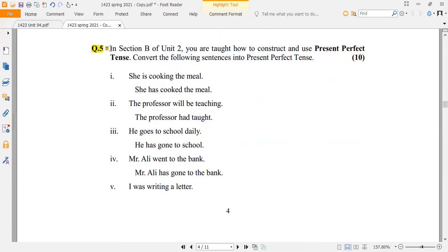That is question number 5. In question number 5, they are saying that in section B of Unit 2, you are taught how to construct and use present perfect tense. They say how to convert the following sentences into present perfect tense.